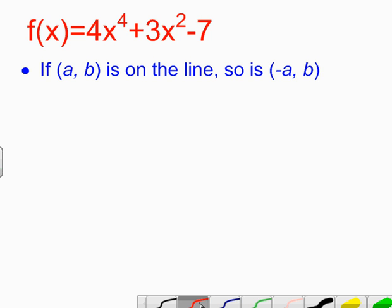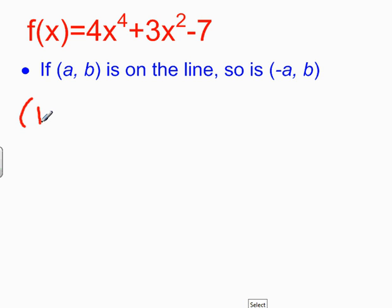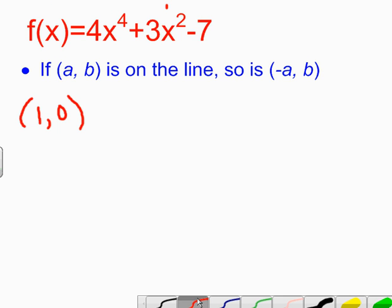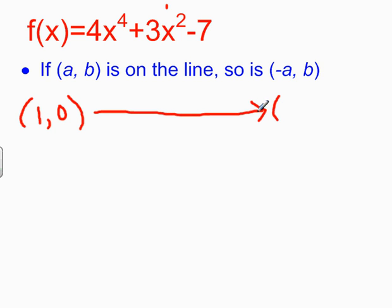For example, if I use 1 as my x, I'm going to put 1 in for f of x. That means f of 1 — everywhere I have an x, I put a 1. 4 times 1 to the 4th power is 4. 3 times 1 squared is 3. 4 plus 3 is 7, minus 7 equals 0. So the point 1 comma 0 is on the line. Now if this is an even function, then I know that if I change the a from 1 to negative 1, and leave the b the same, that point must also be on the line.